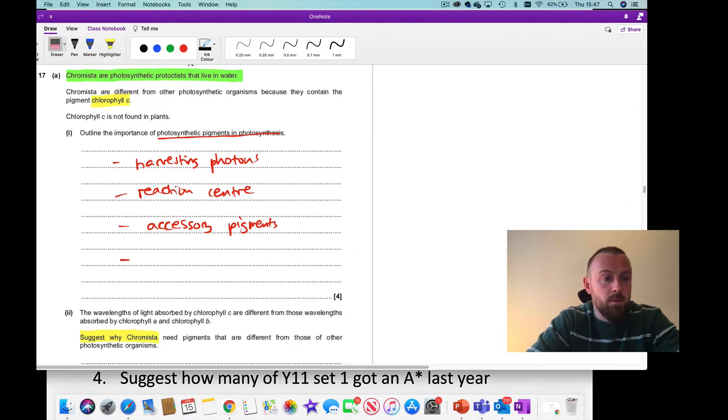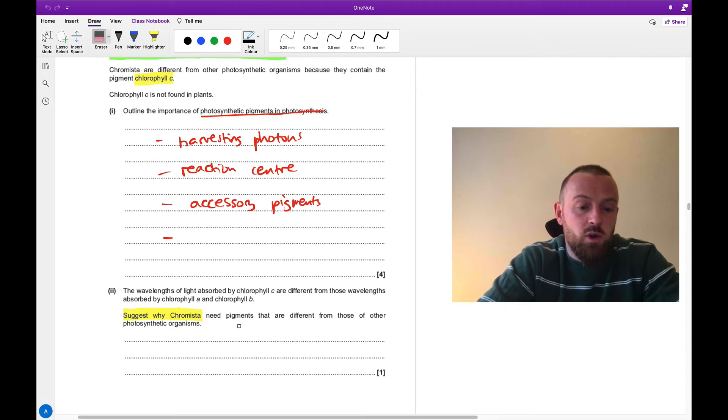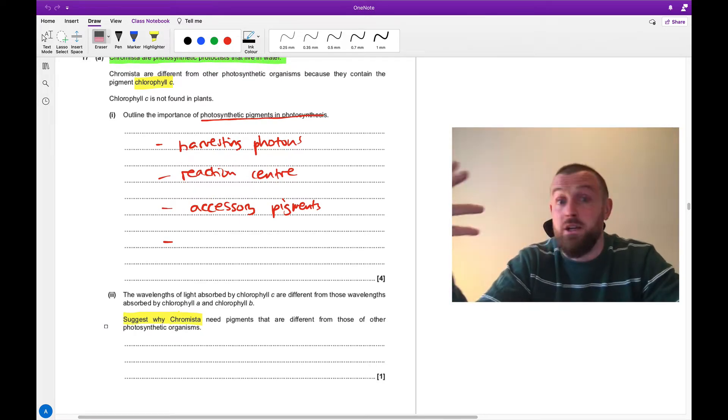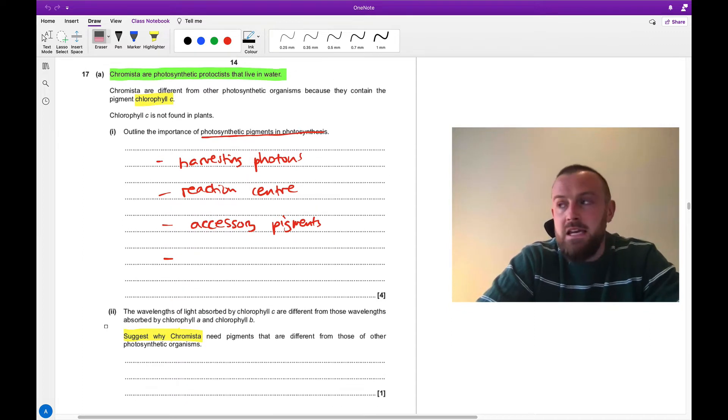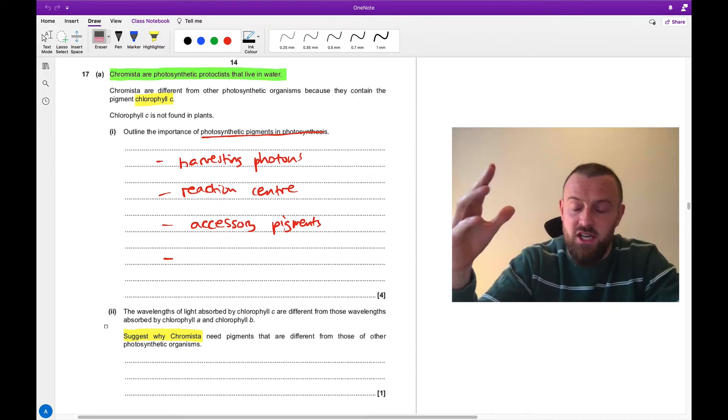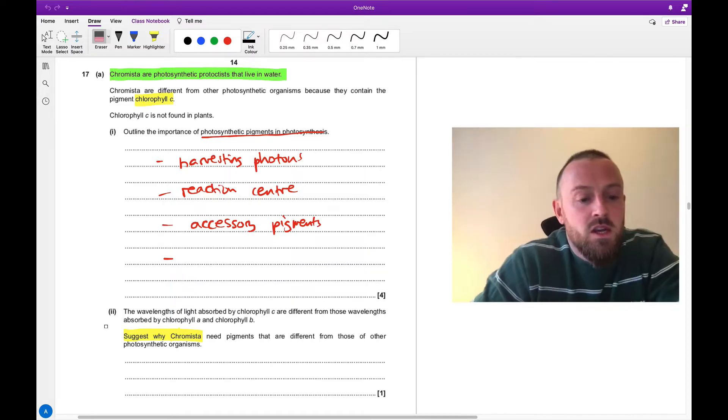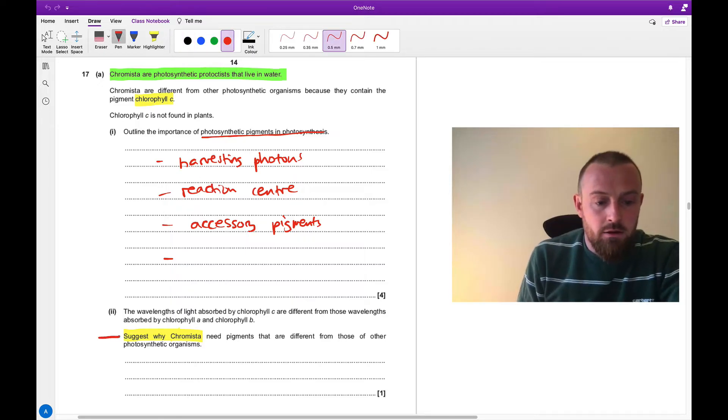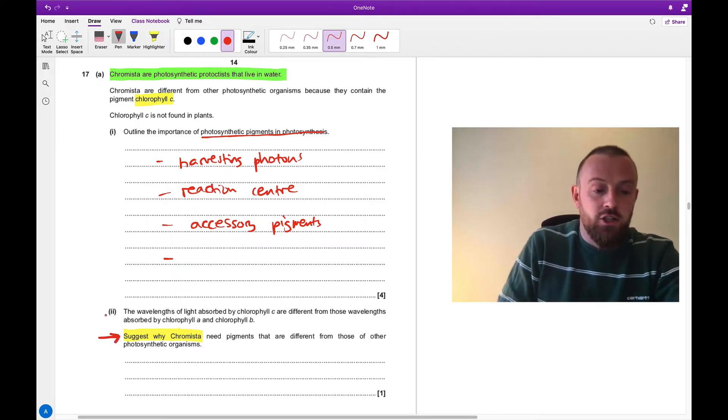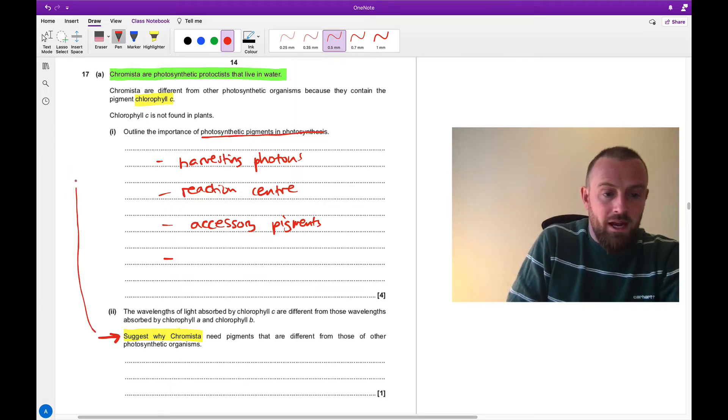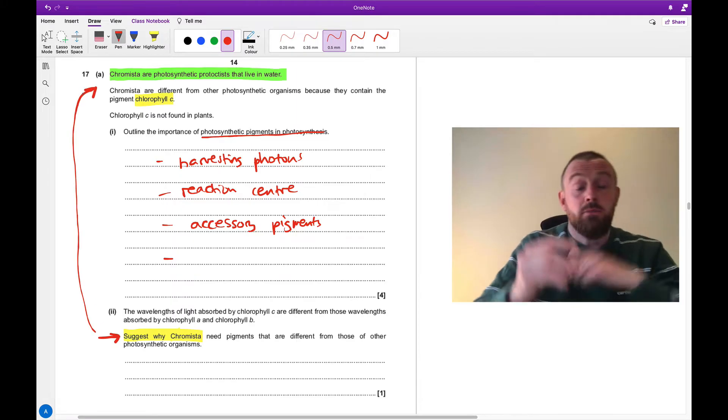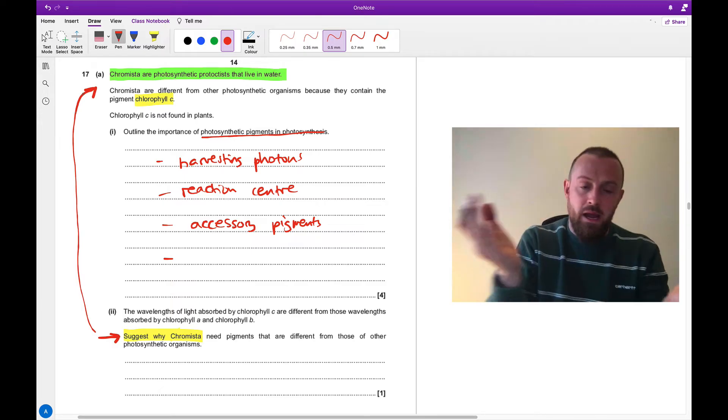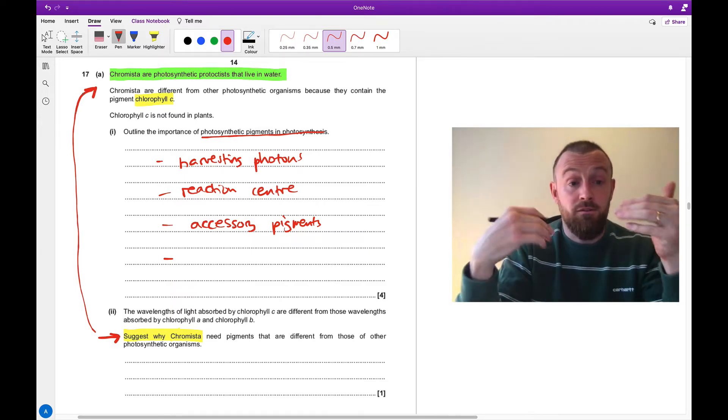If I just go to this old paper which I've got here. Here's a suggest question: suggest why chromista need pigments that are different from those of other photosynthetic organisms. This is a year two A-level type question on photosynthesis. But the tip applies for many suggest questions. If you get a suggest question, especially if it's at the end of a long question, you need to go back to the top of the question. Sometimes when it's a long question, you might even need to turn back a page or two pages in the paper to find the start of the question.